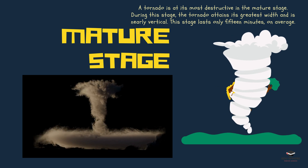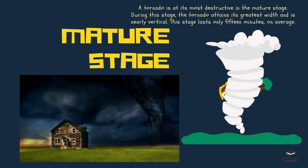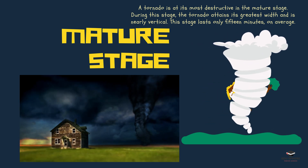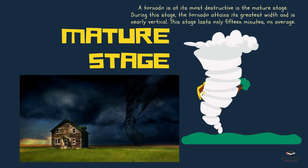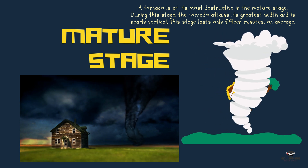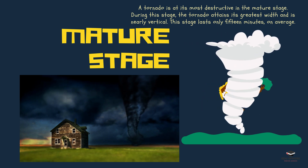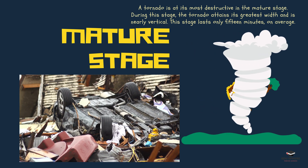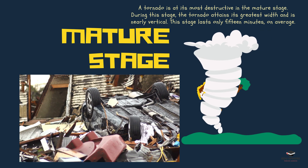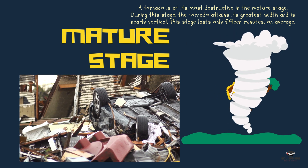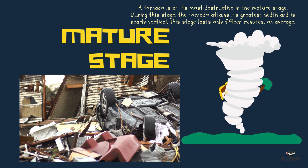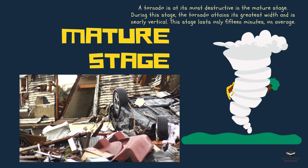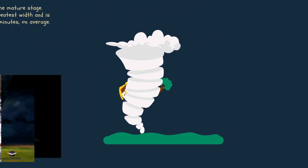The mesocyclone keeps getting stronger and spins faster. A visible funnel cloud comes down from the storm clouds towards the ground and sometimes touches the ground, becoming a tornado. During this stage you can see a well-defined funnel cloud, very strong winds, and a swirling cloud of debris as the tornado picks up things from the ground.